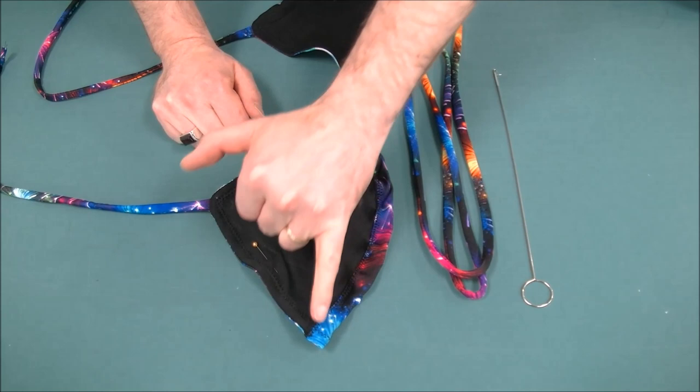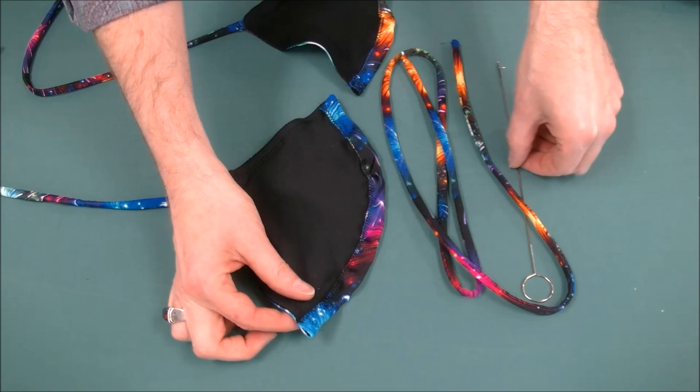So the final step, now that we have the casing sewn for our waist tie to go through, is to actually feed it through. We're actually going to go back and use our loop turner.